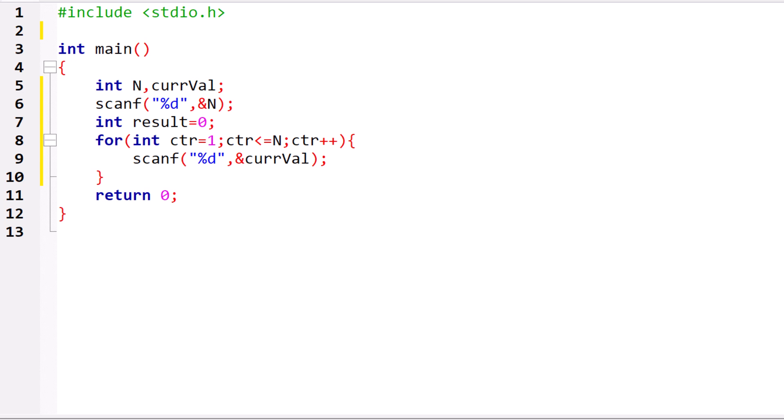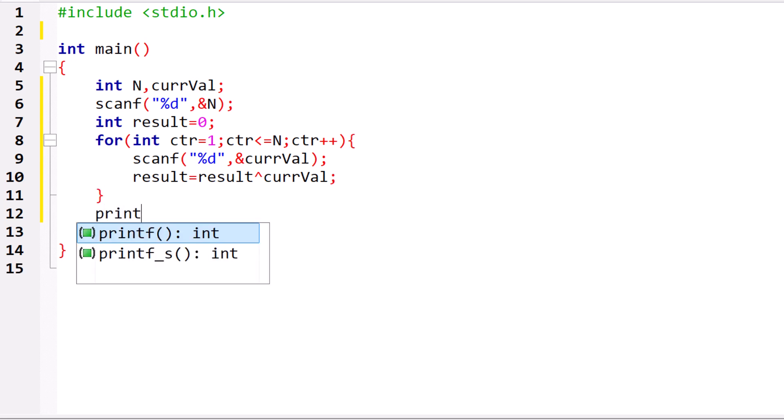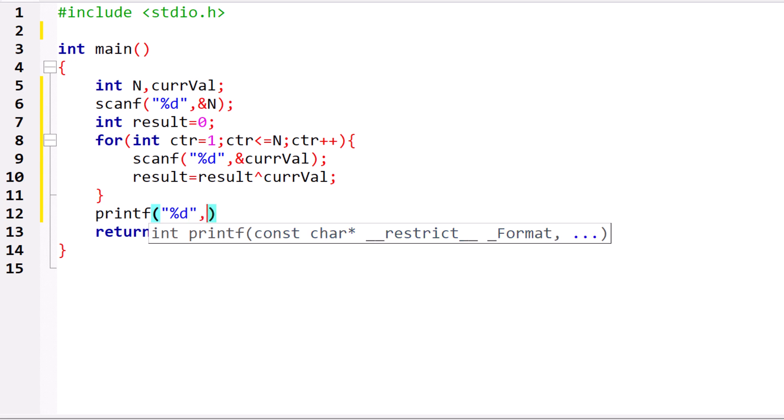Now after accepting the current val, we need to xor result equal to result xor current val. Finally, when you come out of the loop, you can print the result. The result will contain the value which is occurring odd number of times.